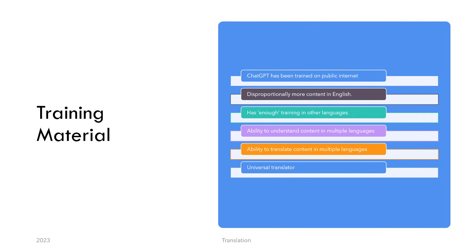ChatGPT has been trained on public internet. This means ChatGPT has read disproportionately more content in English than any other language. But at least for most languages, it has read far more than any human has, except for boundary languages which hardly have any presence or content on the internet. This gives ChatGPT the awesome ability to understand content in one language and translate into another.